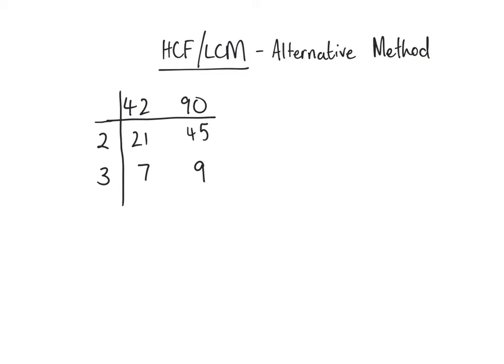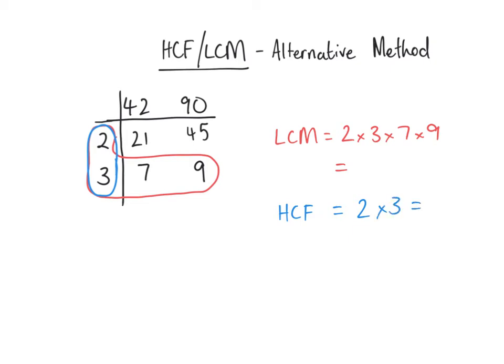Your lowest common multiple is nicely an L shape. Your lowest common multiple is 2 times 3 times 7 times 9, which equals 378. Your highest common factor are just these factors that you pulled out at the side, which is 2 times 3, equals 6. And that's it, that's the method.